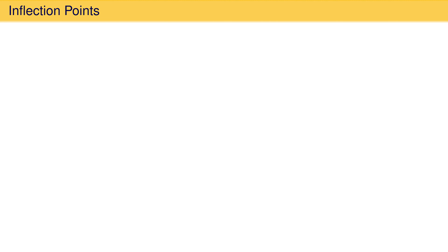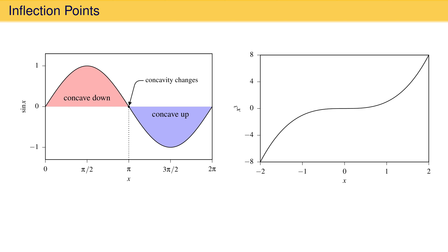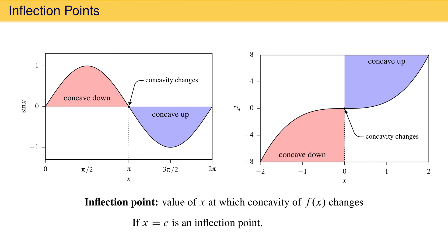What happens at the values of x where a function changes concavity — either from concave down to up or concave up to down? We have seen two examples of this already. The concavity of sine x changes from concave down to concave up at x equals pi. For the function x cubed, the concavity goes from concave down at x less than 0 to concave up at values greater than 0; at 0, the concavity changes. These are called inflection points — values of x at which the concavity of a function changes. At both of these inflection points, the second derivative is 0, indicating that the function is neither concave up nor concave down at that point. This will always be true for an inflection point: if some point c is an inflection point, the second derivative at that point will be 0.